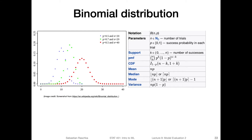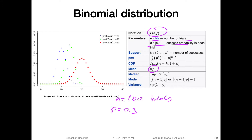Let's start with a binomial distribution, which you surely remember from other statistics classes. The binomial distribution gives us the number of successes. The parameters of the binomial distribution are n and p, where n is the number of trials and p is the success probability. The mean of the binomial distribution is n times p. For example, if I have 100 trials and a probability of 0.3 — 30% success probability — then the mean would be 30.